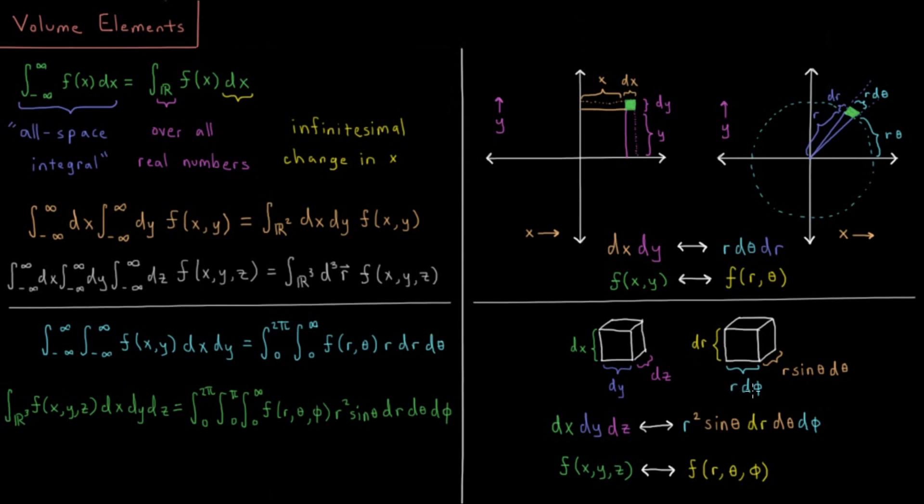So putting all three of these together, we get r² times sin θ, dr dθ dφ. And that's our final volume element for integrating functions in spherical polar coordinates or polar coordinates relative to the same kind of Cartesian functions in two or three dimensions.